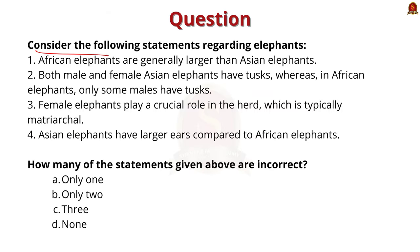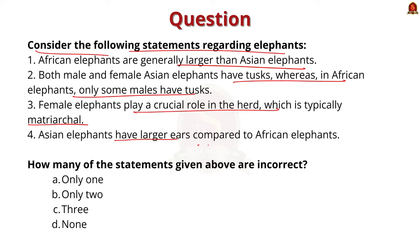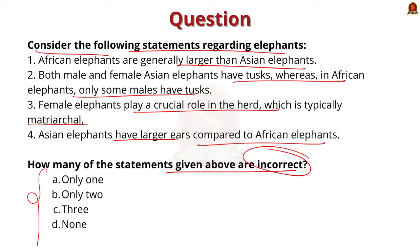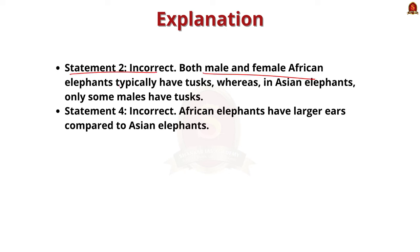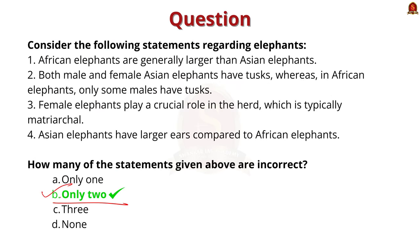Consider the statements regarding elephants: 1. African elephants are generally larger than Asian elephants. 2. Both male and female Asian elephants have tusks, whereas in African elephants only some males have tusks. 3. Female elephants play a crucial role in a herd, which is typically matriarchal. 4. Asian elephants have larger ears compared to African elephants. How many of the statements given above are incorrect? Option A: only 1. Option B: only 2. Option C: 3. Option D: none of the above. The correct answer is Option B, only 2. Statement 2 is incorrect because both male and female African elephants typically have tusks, whereas in Asian elephants only some males have tusks. Statement 4 is also incorrect because African elephants have larger ears compared to Asian elephants. So statements 2 and 4 are the only incorrect ones.